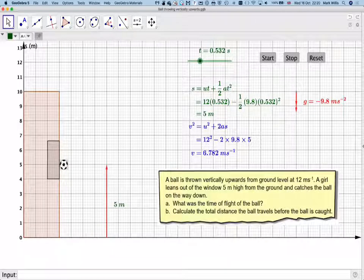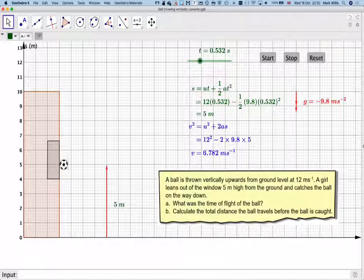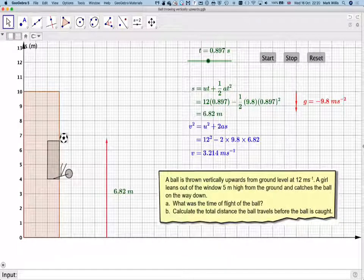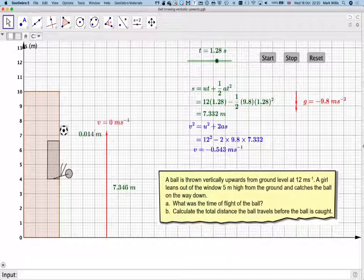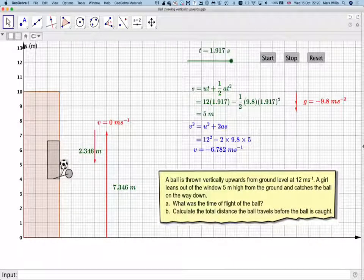Okay, so it will be one time up, we'll get two values from our equation, one there, and then one where it finally catches the ball on the way down. Okay, going back to the math.